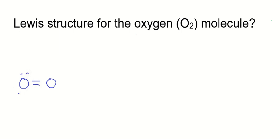We see that when we're drawing the Lewis structure for the O2 molecule. The nice thing is that it does predict the bond order as a double bond, and it also shows nicely both the oxygens achieving the octet.